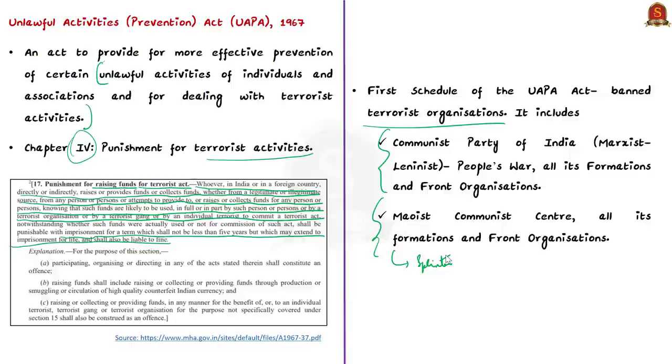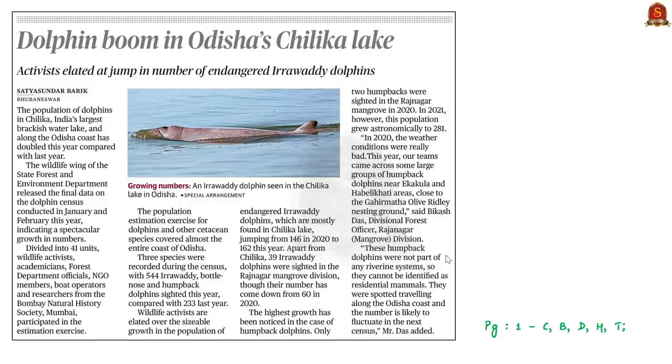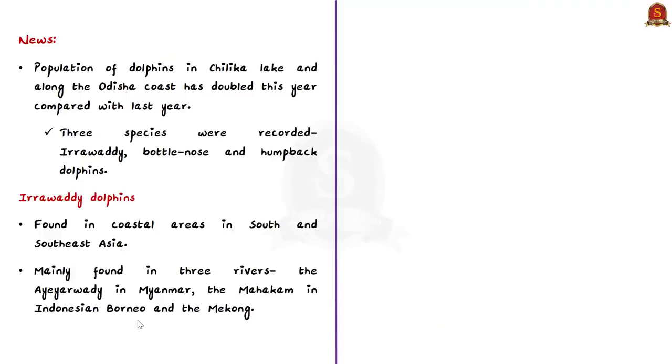Let's move on to the next news article. This article says that the population of dolphins in Chilika Lake and along the coast of Odisha has doubled this year in comparison with the previous year. During the population estimation exercise, three species of dolphins were recorded. They include the Irrawaddy, Bottlenose and Humpback Dolphins. Now, on coming to the news article, the good news is that there is a sizable growth in the population of endangered Irrawaddy dolphins.